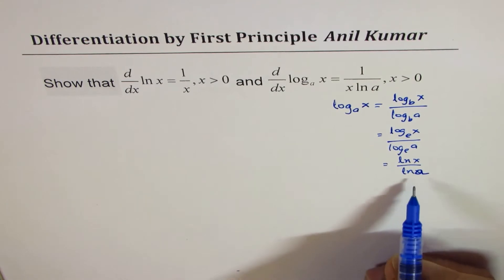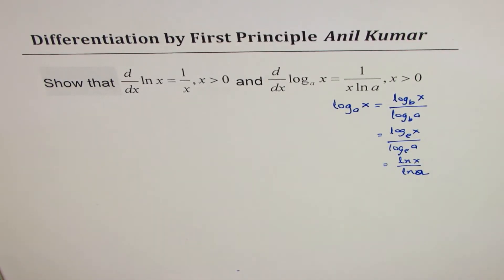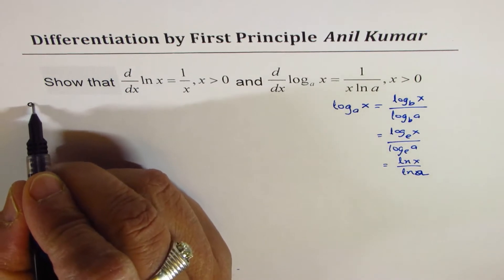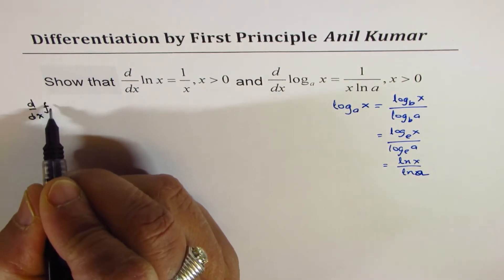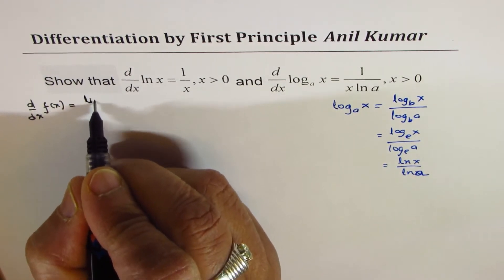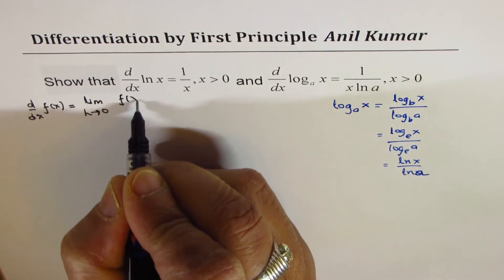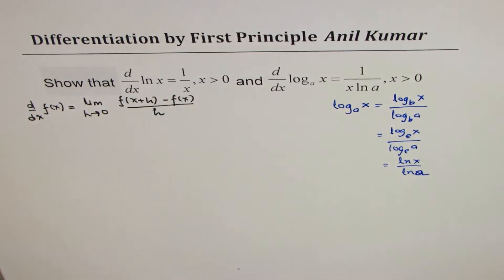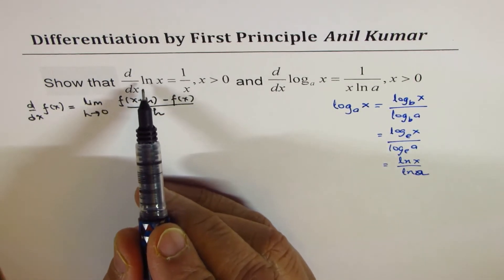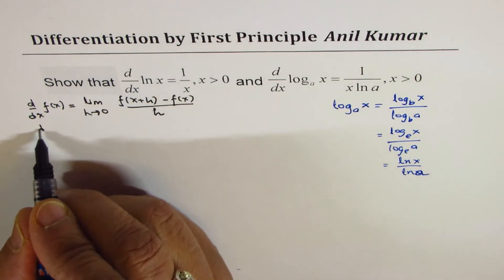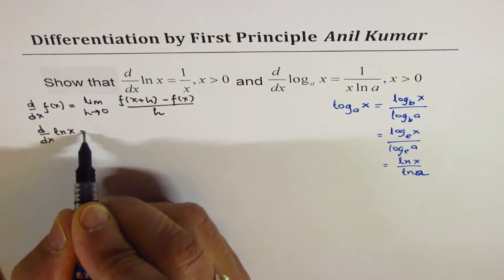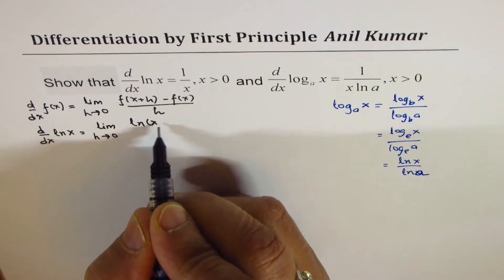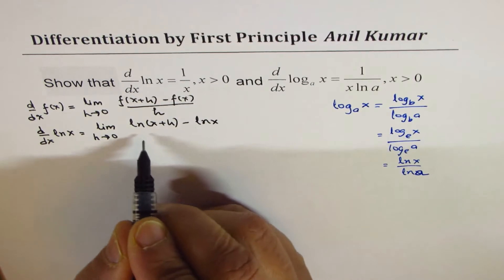The second part you could do yourself. Now let's begin. When we say first principle, we are using the definition that the derivative of any function is equal to the limit as h approaches 0 of f(x + h) minus f(x) over h. That's the rate of change. In our case, the function is ln(x), so we can say the derivative of ln(x) is equal to the limit as h approaches 0 of ln(x + h) minus ln(x) over h.